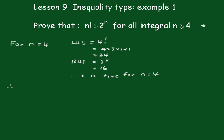Now we'll assume the statement is true for n equals k. That is, k factorial is greater than 2 to the k.